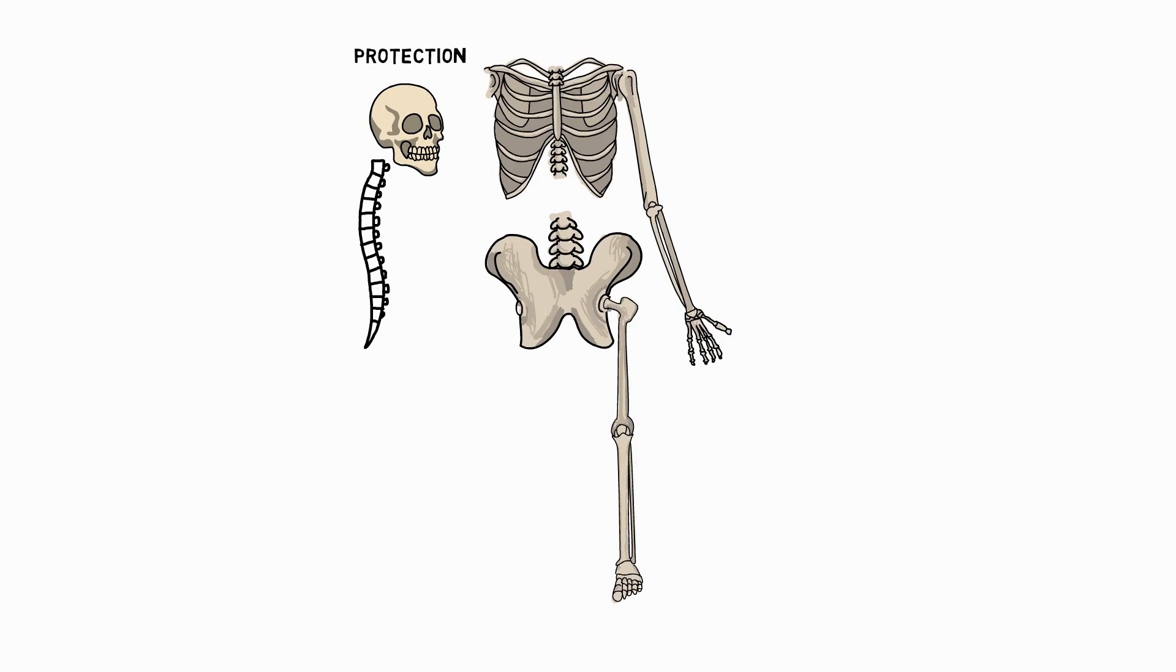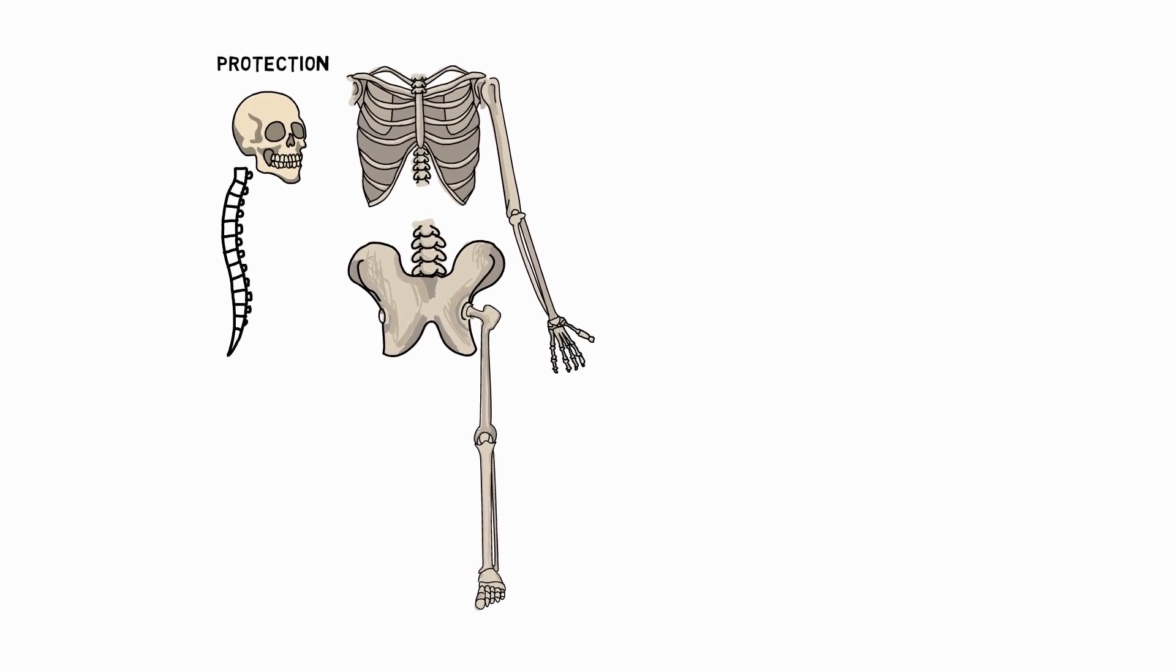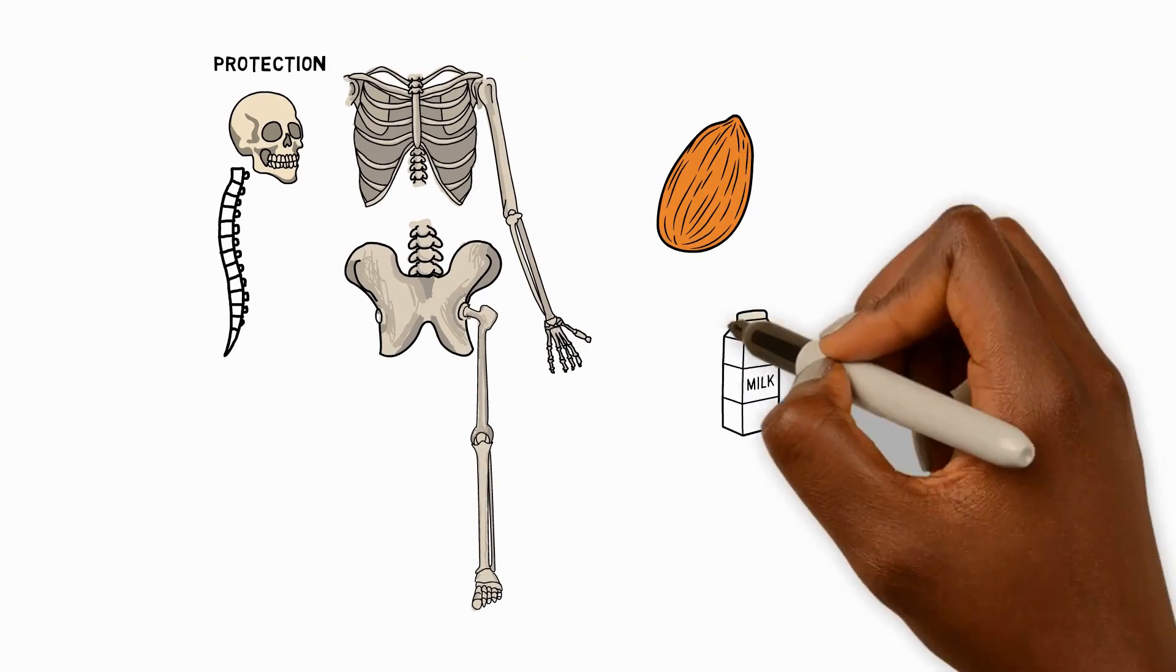Bones are made mostly of a protein called collagen and a mineral called calcium. Our bodies can't make calcium so we have to get it from the food that we eat. Almonds, milk, and broccoli are good sources.